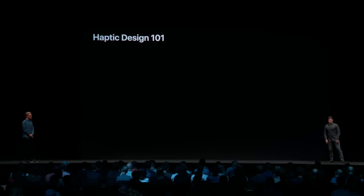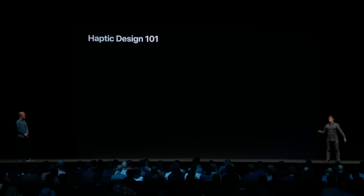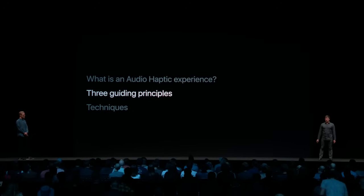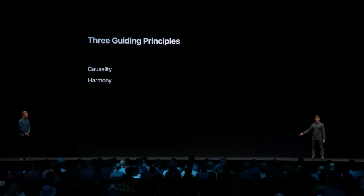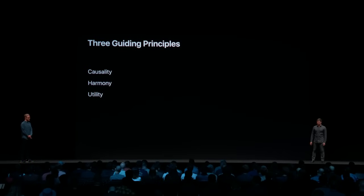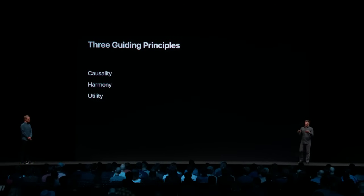Now, let's look at the three guiding principles that we want to share with you today. First is causality. Then we have harmony. And lastly, we have utility. These concepts are used throughout the work that we do at Apple, and we think they can help you in your own app experience. For each of them, we'll look at the concept and explain through a few examples. Let's get started.